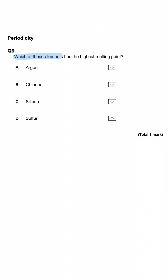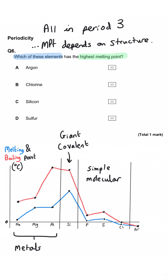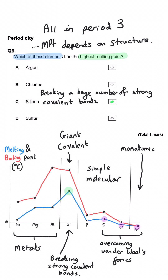Which of these elements has the highest melting point? These are all period 3 elements, and the pattern across period 3 has the three metals on the left, then the giant covalent silicon, then three simple molecular substances, and lastly monoatomic argon. Silicon has the highest melting point because melting it requires breaking a vast number of very strong covalent bonds, whereas sulfur, chlorine and argon only have weak van der Waals forces between molecules or atoms. So silicon is the correct answer.